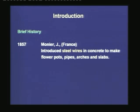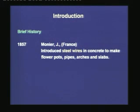In 1857, Monier in France introduced steel wires in concrete to make flower pots, pipes, arches, and slabs — the concept of reinforced concrete began to evolve. Monier placed steel wires to hold the cracked concrete, and the application of reinforced concrete started to develop. Although flower pots and pipes may appear mundane today, during that time it was a significant achievement in the concept of reinforcing concrete.